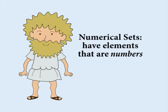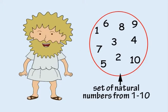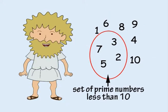Numerical sets have elements that are numbers. For example, this is the set of natural numbers from 1 to 10. And this is the set of prime numbers that are less than 10.